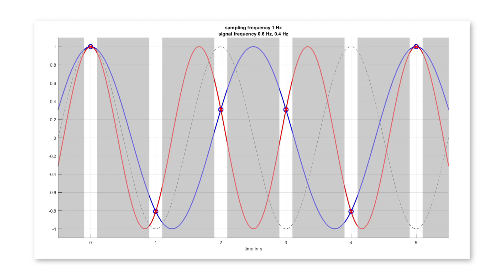This also means in reverse that if we only know about the sampled values of the signal, we cannot distinguish whether we sampled the blue signal or the red signal, because all the sampling values would be the same forever.